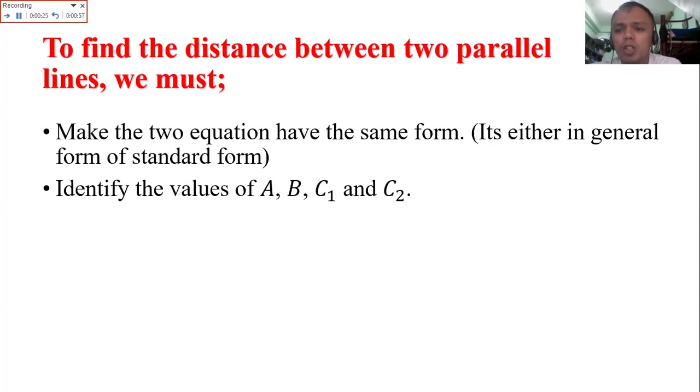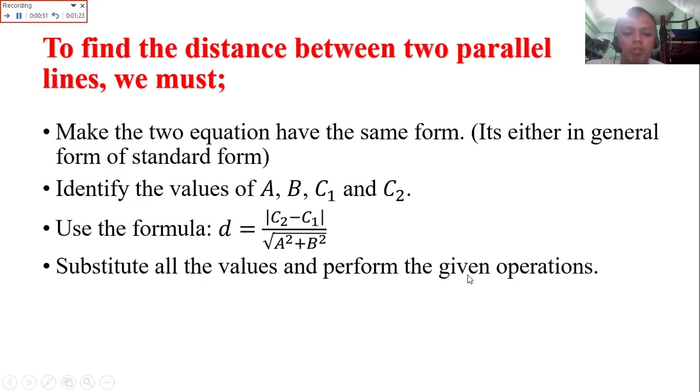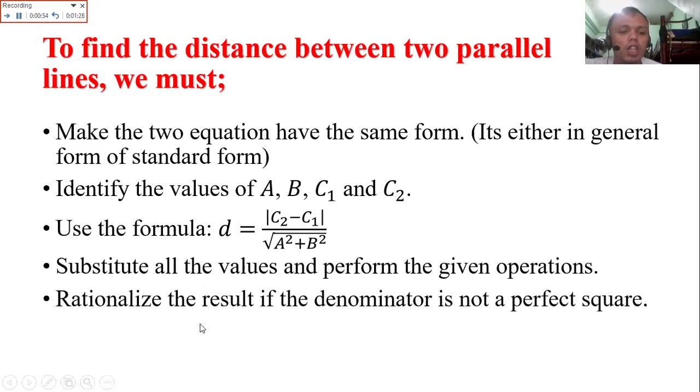Why are there two values of C? Because when dealing with parallel lines, the values of A and B are equal for the two lines. They only differ in C. Use the formula D equals the absolute value of C sub 2 minus C sub 1, all over the square root of A squared plus B squared. Then substitute all the values and perform the given operations. Rationalize the result if the denominator is not a perfect square, but there's another technique to make it easier.